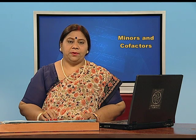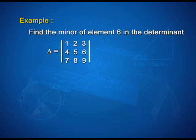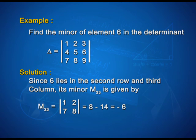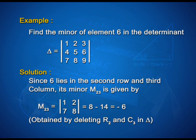Let us solve an example. Find the minor of element 6 in the determinant with elements 1, 2, 3, 4, 5, 6, 7, 8, 9. Since 6 lies in the second row and third column, its minor M_23 is given by the determinant of 1, 2, 7, 8, which on solution gives 8 minus 14, that is equal to minus 6. This is obtained by deleting R2 and C3 in the given determinant.